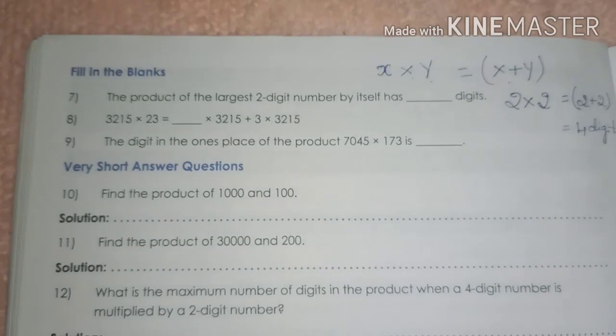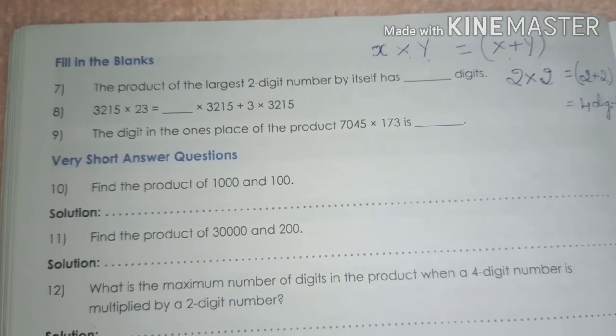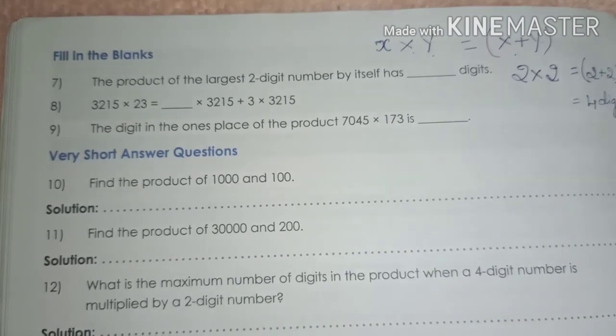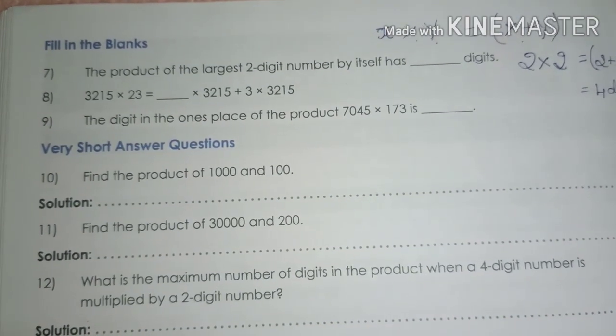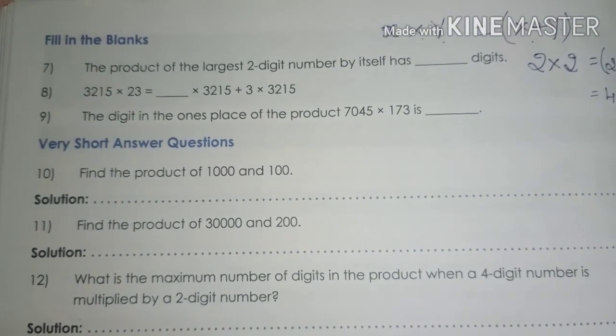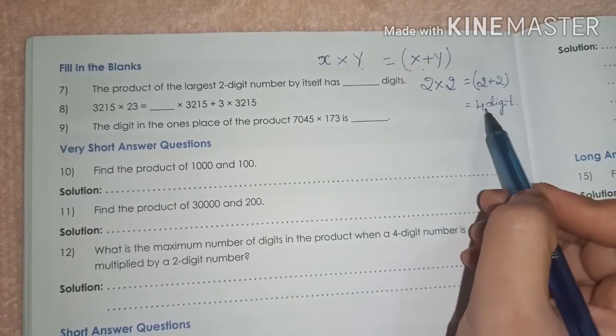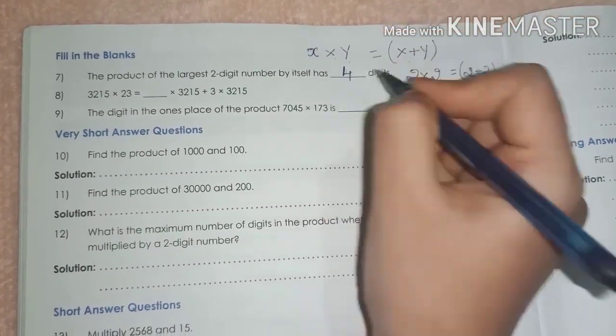Did you now understand this? Remember the general statement that if an x-digit number is multiplied by a y-digit number, then their product is not more than a x plus y-digit number. So, the right answer here is 4 digits.